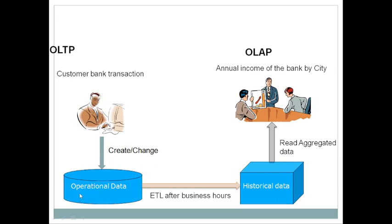You may notice sometimes that bank servers are slow or not working properly — that's because other jobs are being run on the same system. To avoid this, we create a separate OLAP system and load the data there for analysis, without disturbing the OLTP system. Day-to-day transactions are very important, so we move all data to OLAP. In summary: OLTP is for daily transactions, OLAP is for historical data analysis.